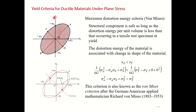The Von Mises criterion is represented graphically as an ellipse, with σ_a on the x-axis and σ_b on the y-axis. For different yield stress values, this ellipse can be drawn with a major axis and a minor axis.